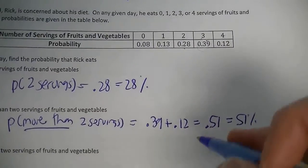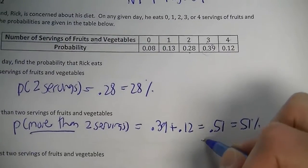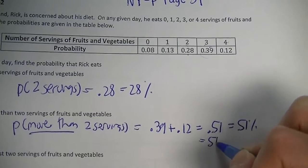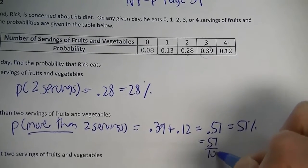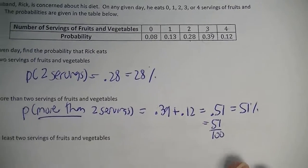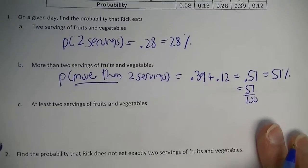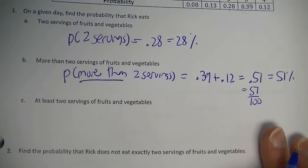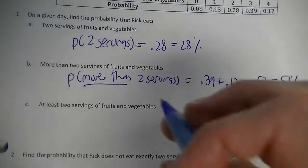You can also write fifty-one hundredths as a fraction — same thing. Letter C: at least two servings of fruits and vegetables.